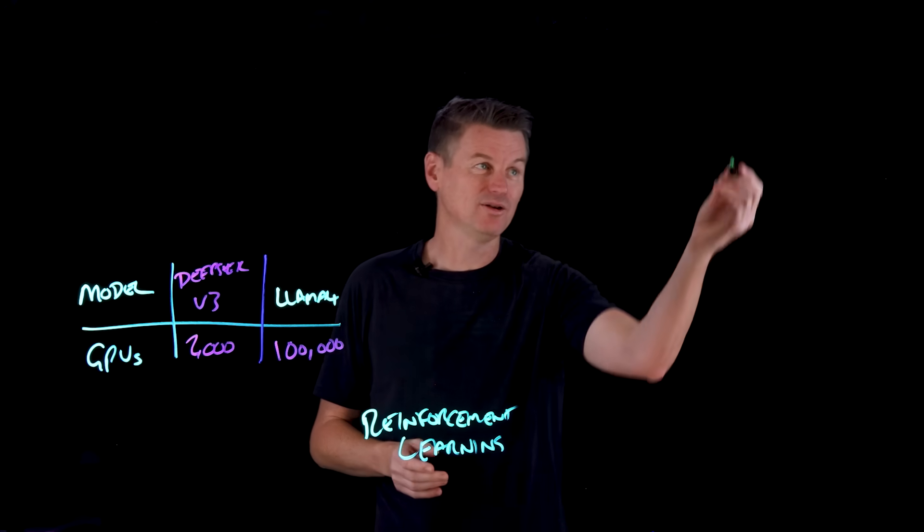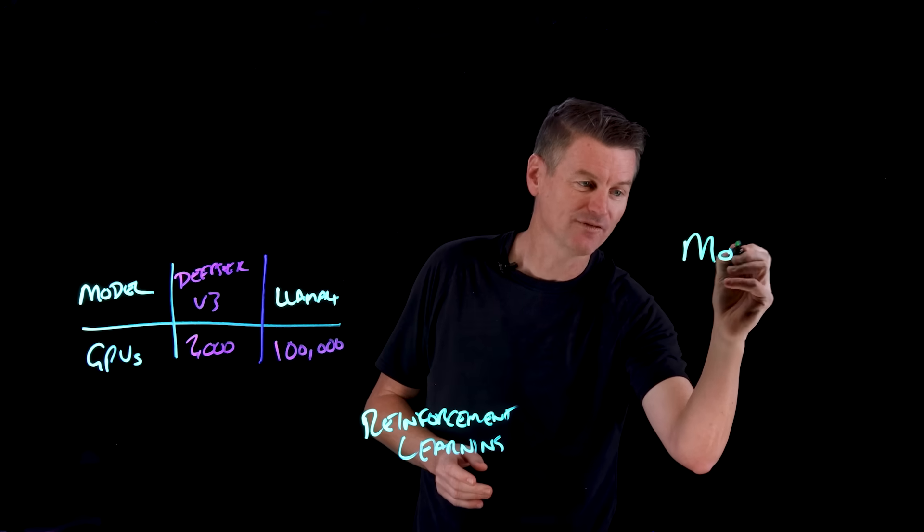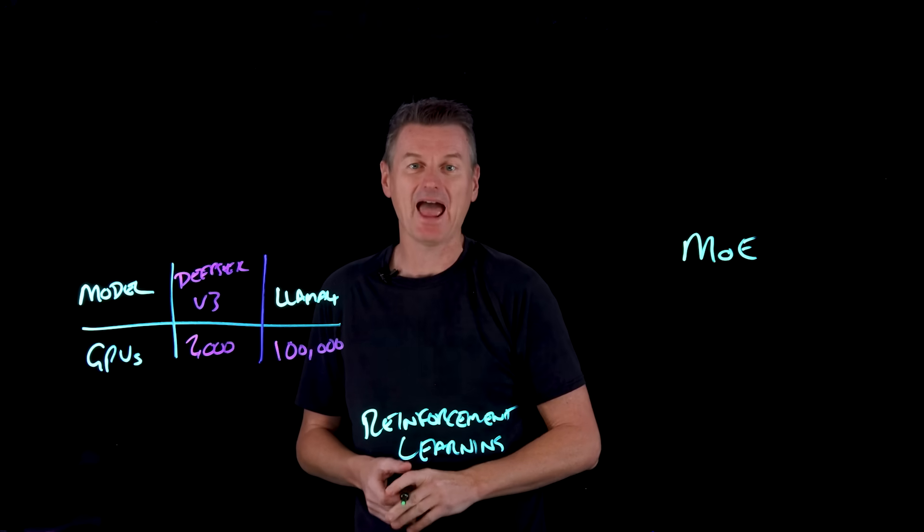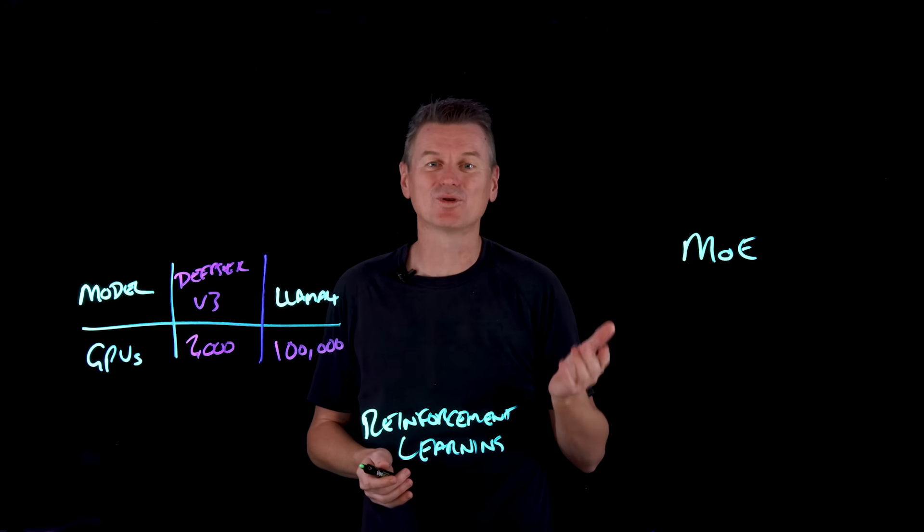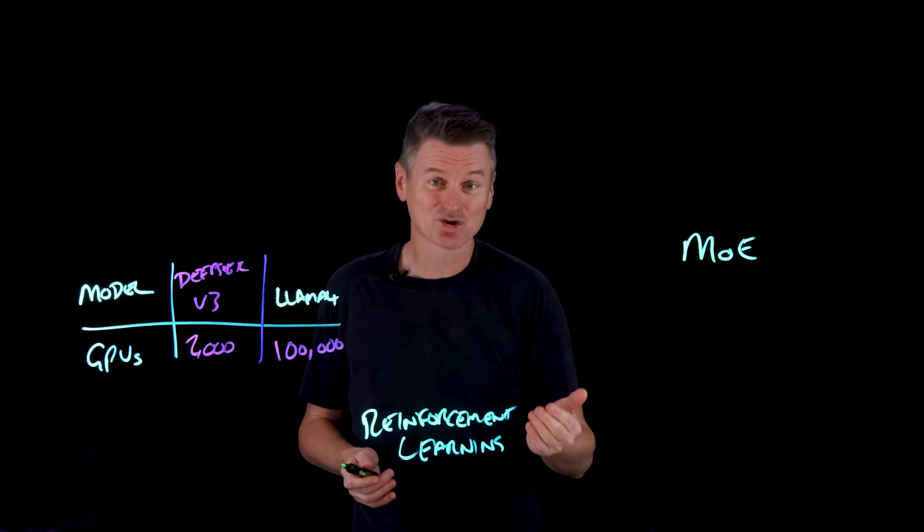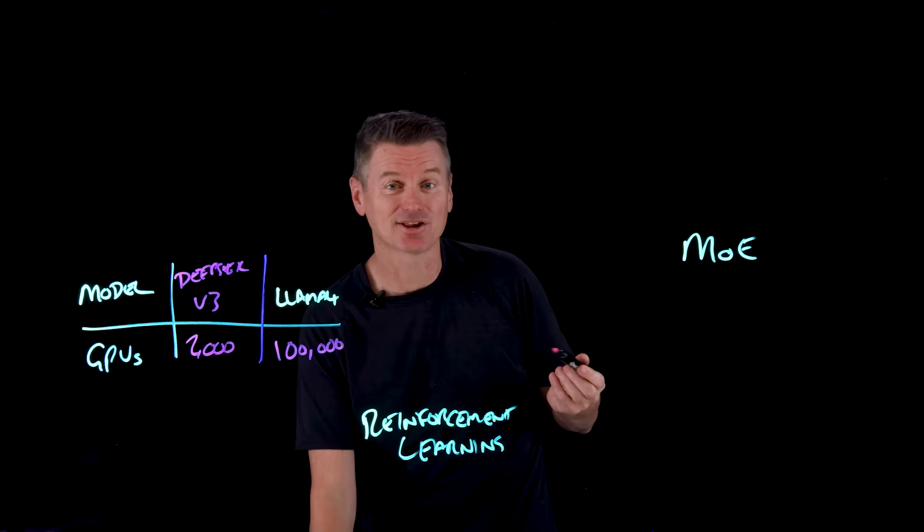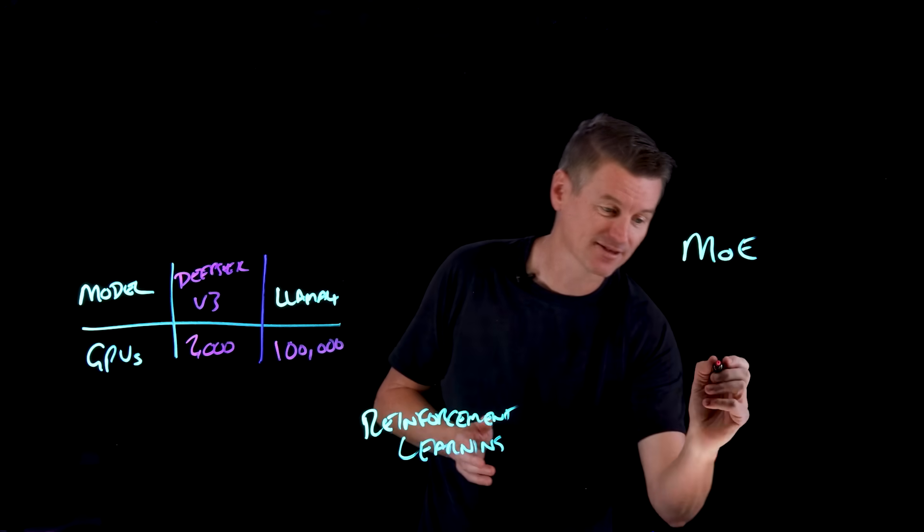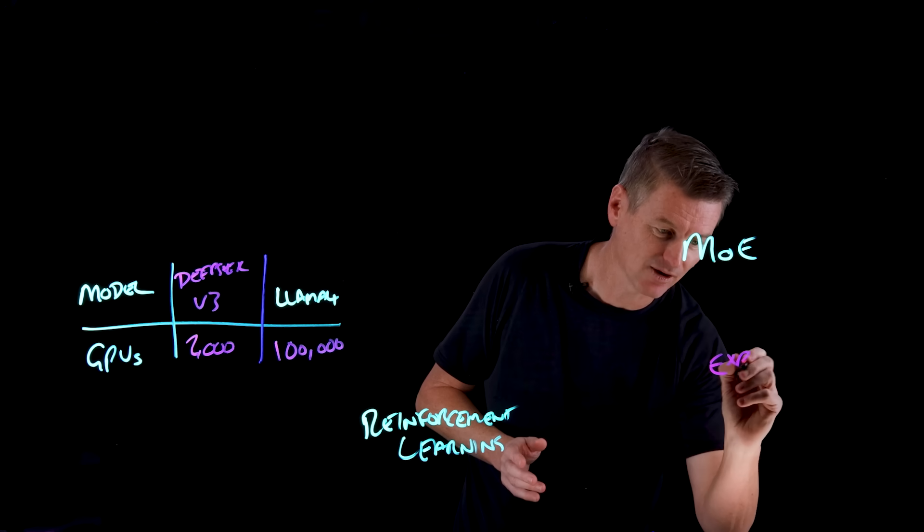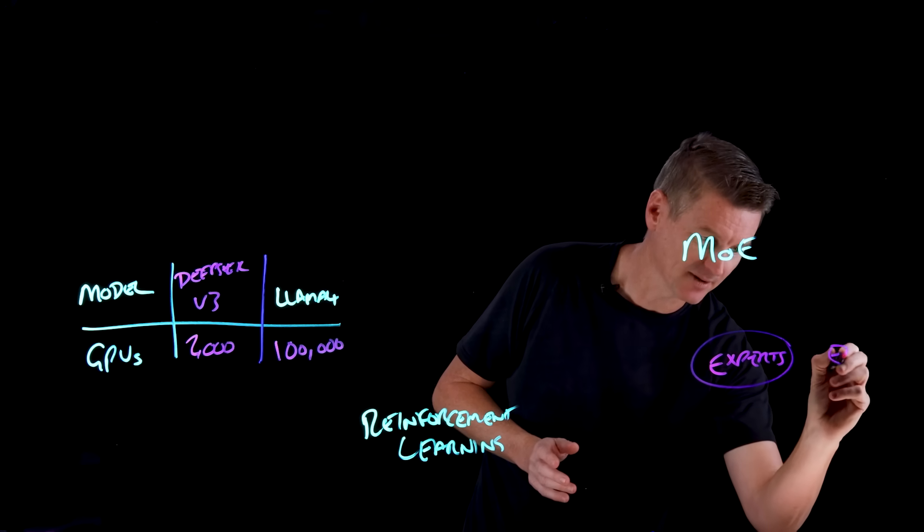Now, DeepSeek R1 also uses a mixture of experts architecture, or MOE. And a mixture of experts architecture is considerably less resource intensive to train. Now, the MOE architecture divides an AI model up into separate entities or sub-networks, which we can think of as being individual experts.